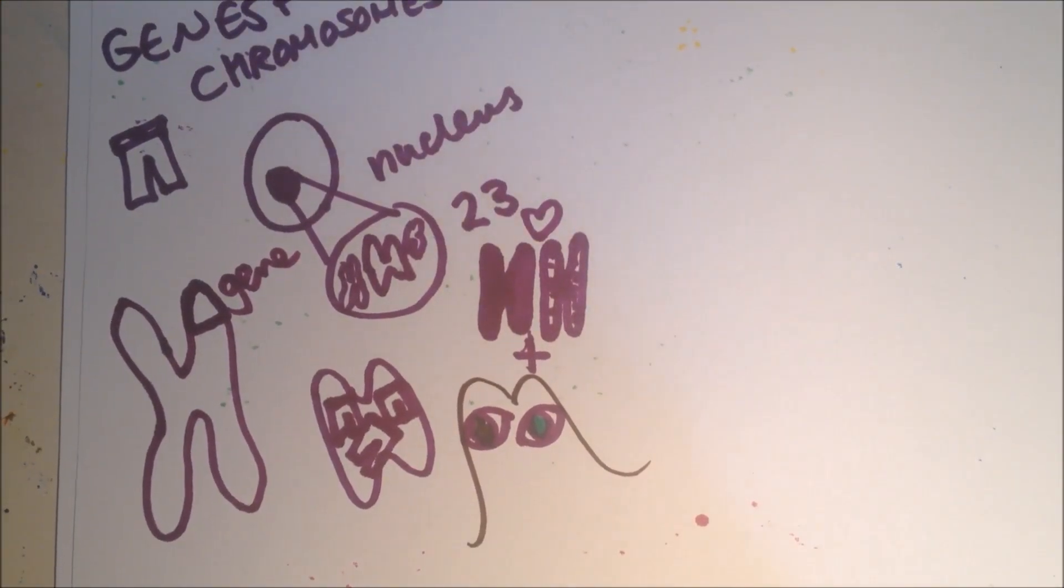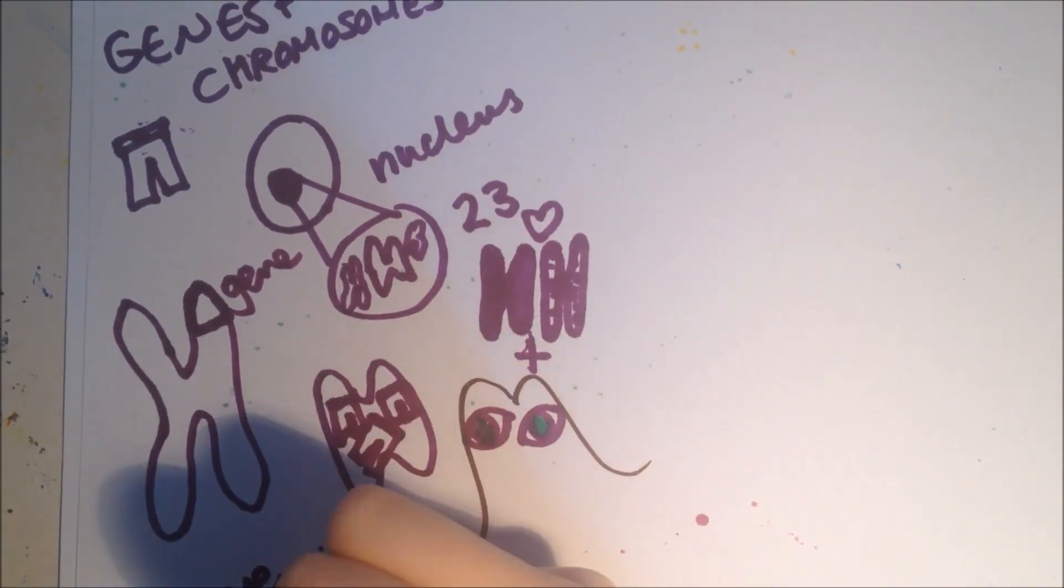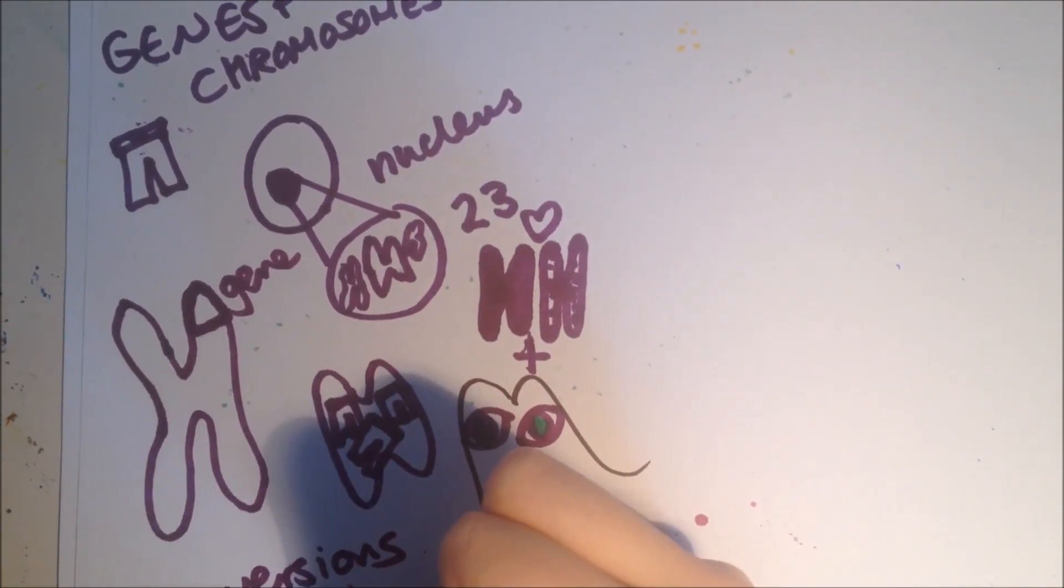There can be different versions of the same gene, which give different versions of a characteristic. The different versions of a gene are called alleles.